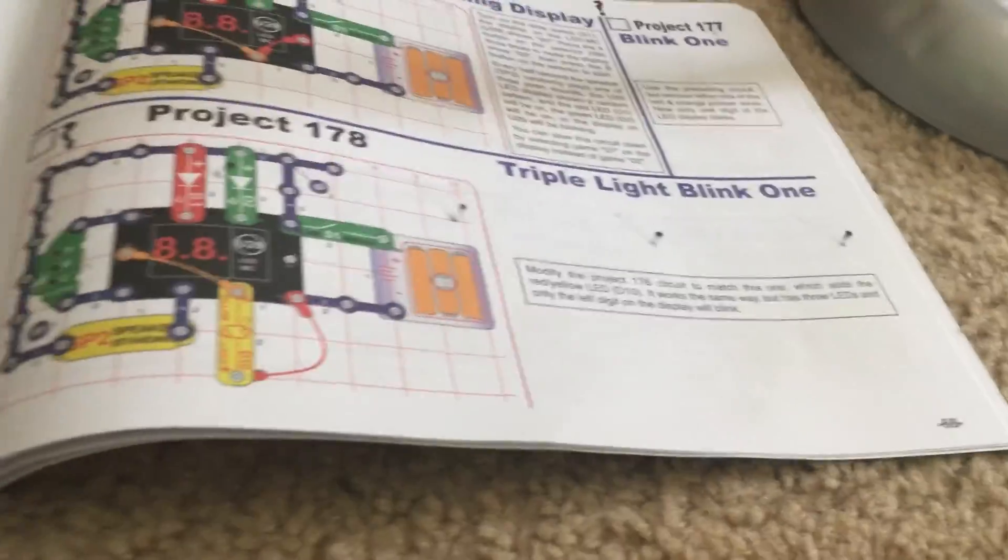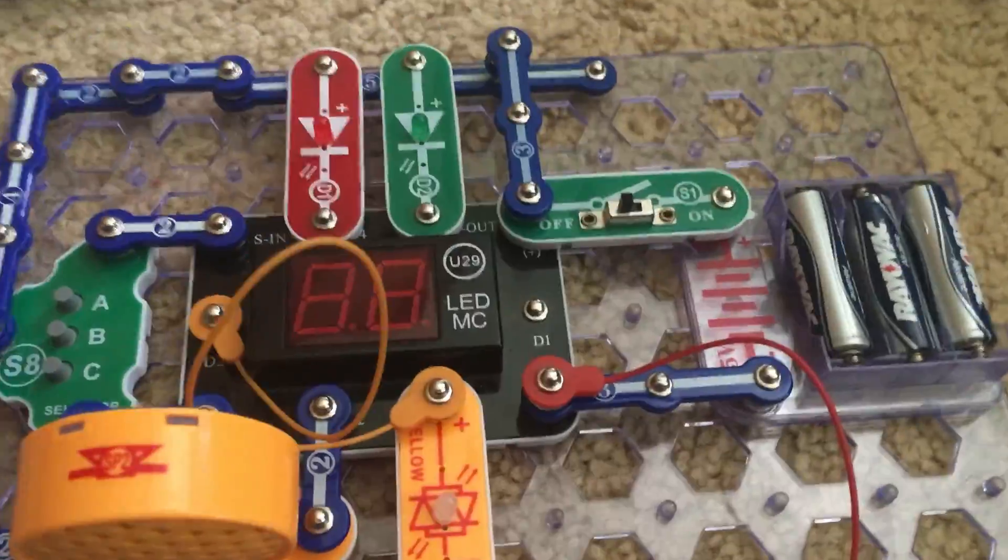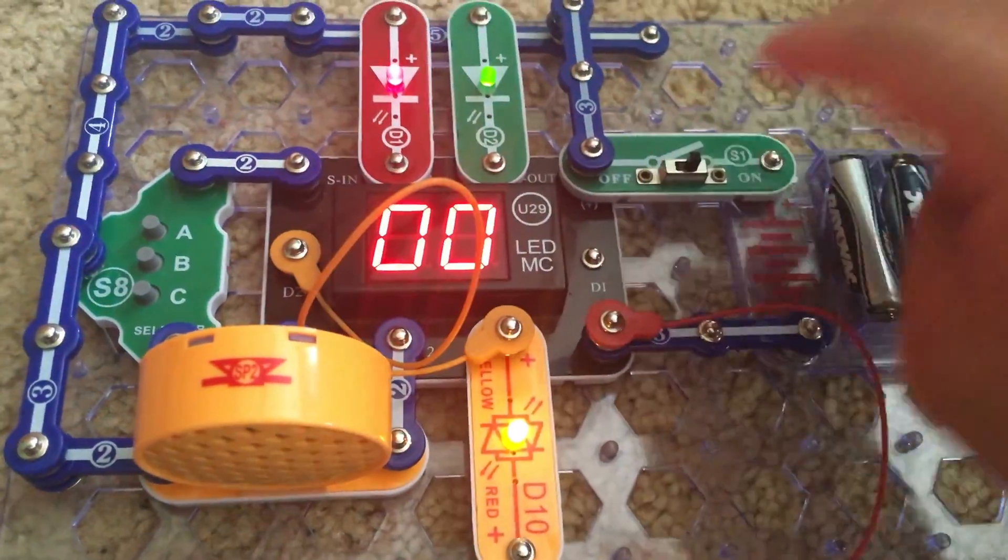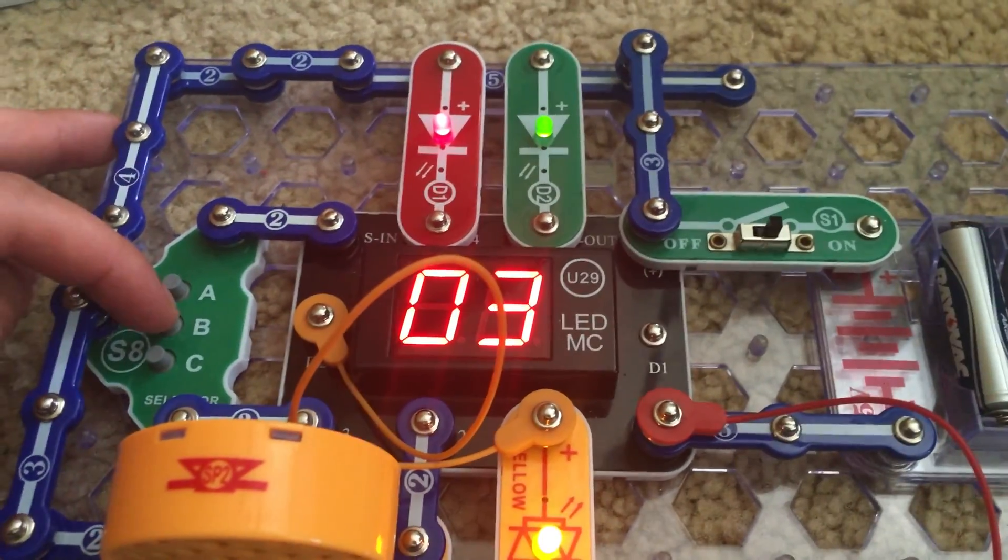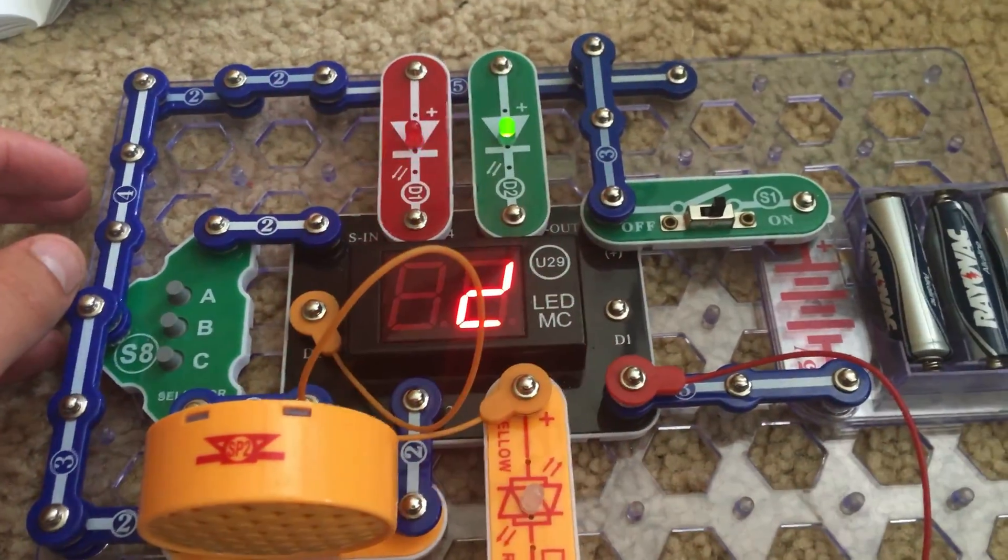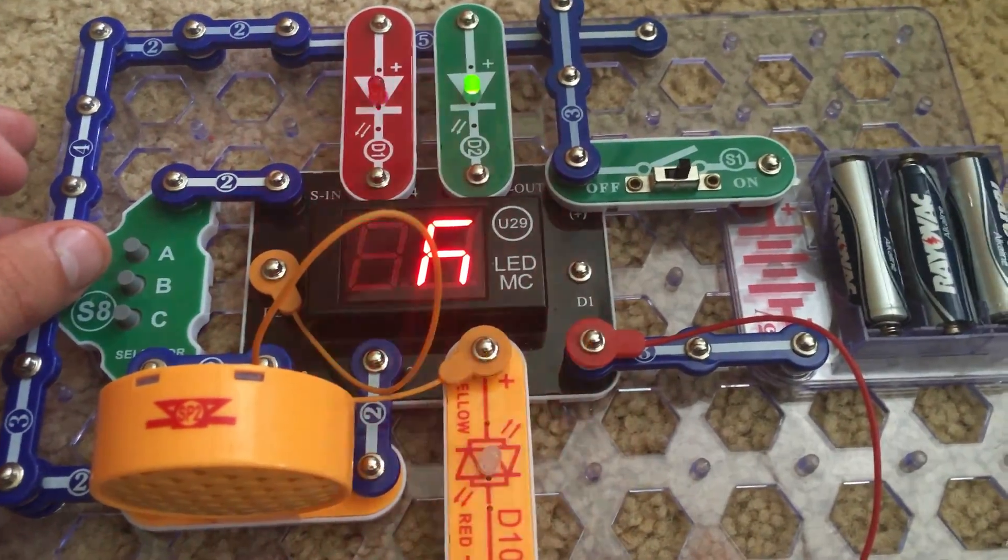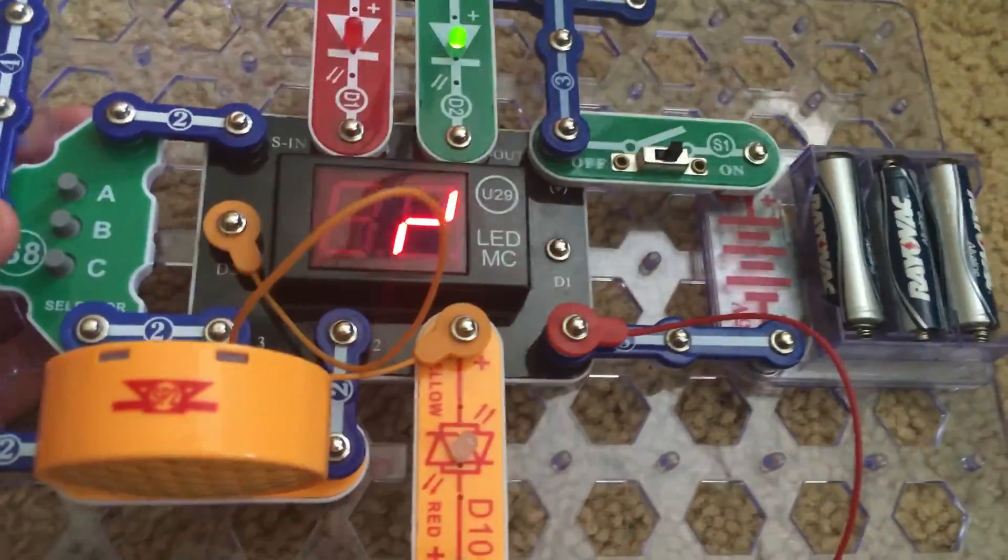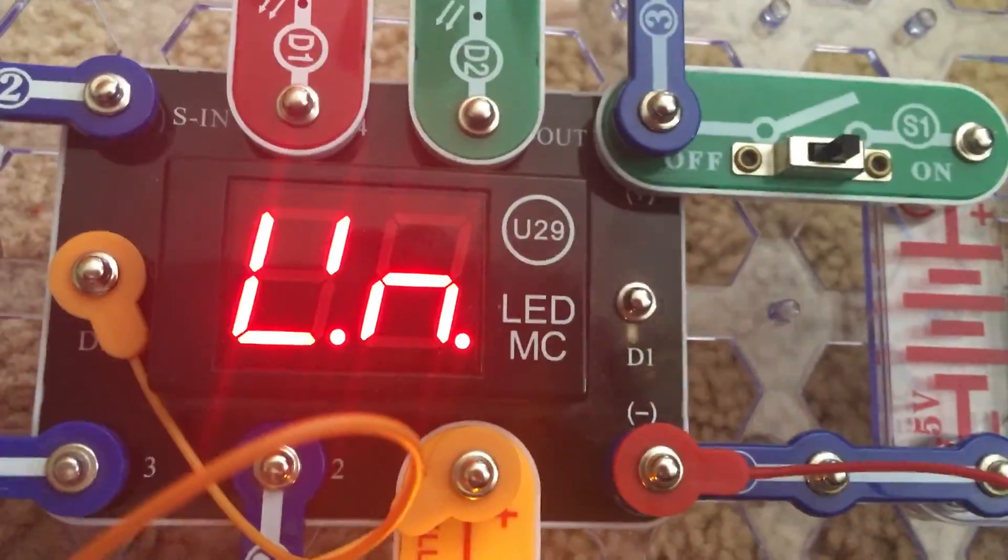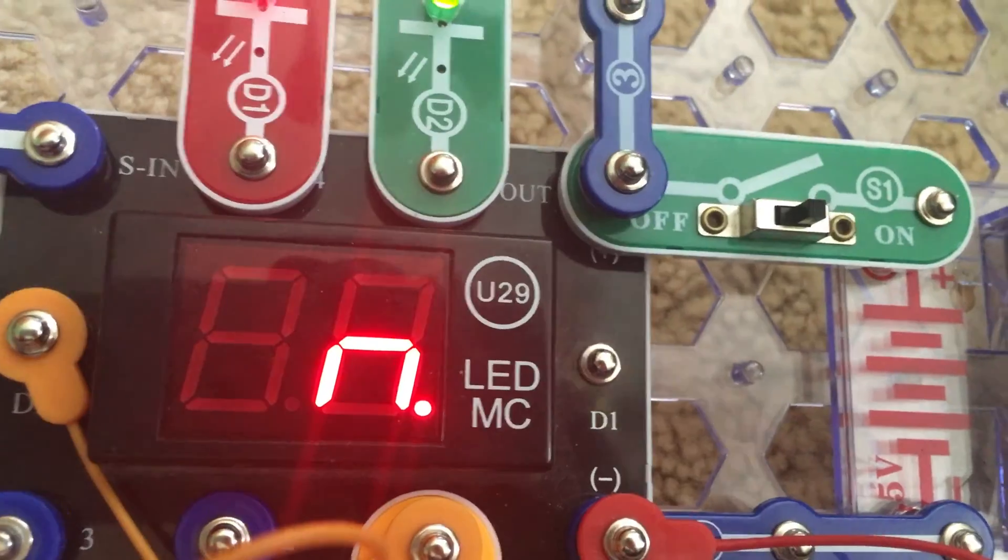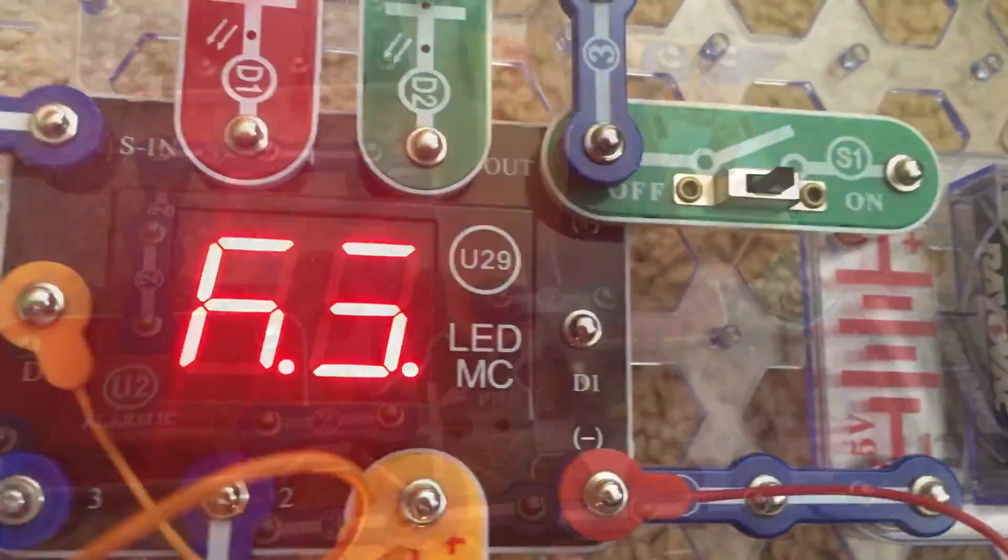178 is triple light blink 1. For this project we have all three LEDs along with the U29 display and speaker. We are going to select game 3 and let's see what happens. The LEDs come on and off at different rates, and the U29 display pattern changes while the speaker sounds. But only one of the two digits on the display will blink, and that is the tens digit.